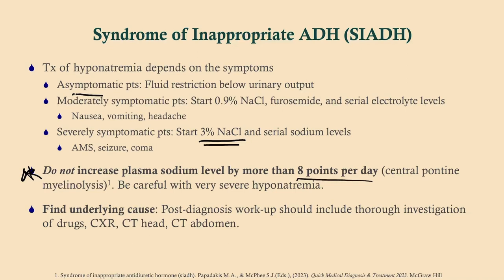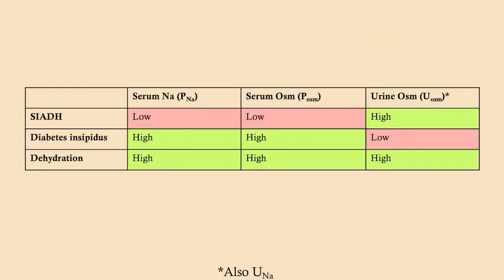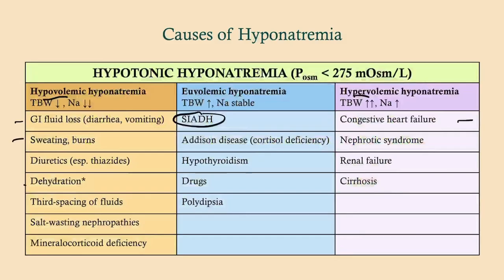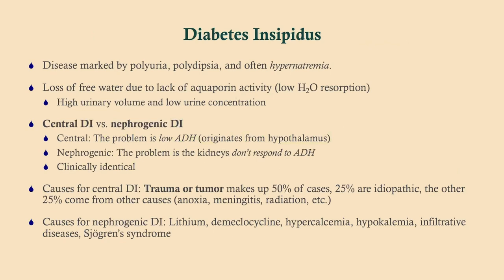You have to weigh your options — if the patient is severely symptomatic you work faster, but you risk correcting too quickly. The complication of rapid correction of hyponatremia is central pontine myelinolysis. Find the underlying cause: CT head for trauma, CT abdomen and chest X-ray for pancreatic and lung cancer, which are the two big malignant causes.